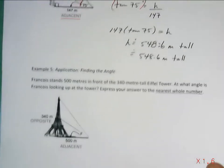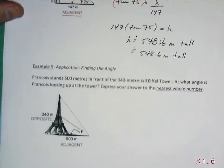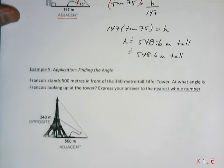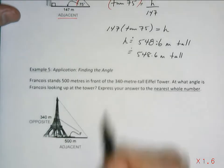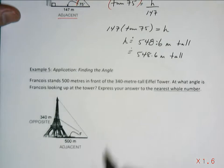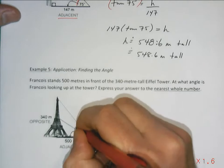Example 5. Let's finish this off. Francois, that's a nice French name. Francois is standing 500 meters in front of the 340 meter tall Eiffel Tower. At what angle is he looking up at the tower? So again, Francois is looking up at the tower.